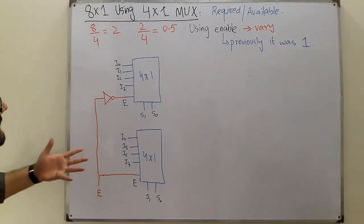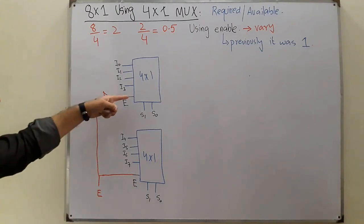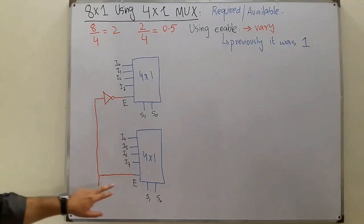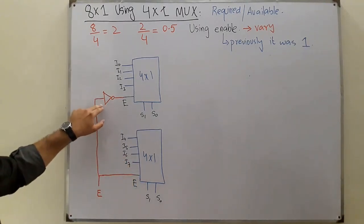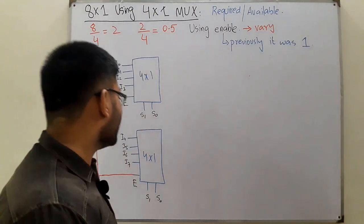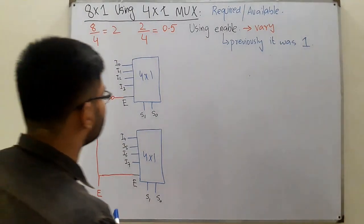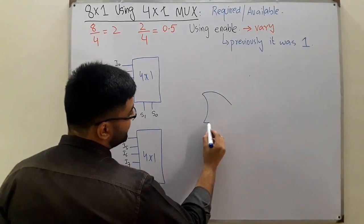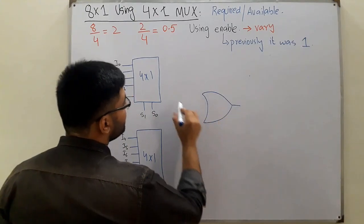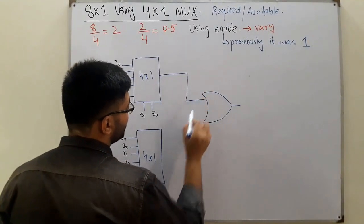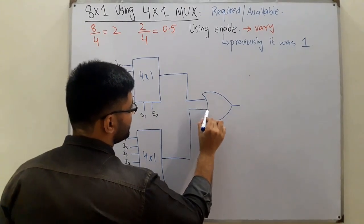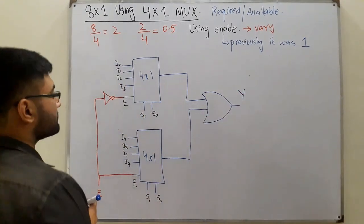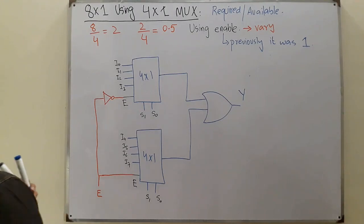The select lines are named S1 and S0 (S-naught). By routing through the NOT gate, when enable E is one this first MUX is on and the second is off via the NOT gate, and vice versa. To combine the outputs of both MUXes we place an OR gate, feeding the final output of each MUX into it to get the final output Y.